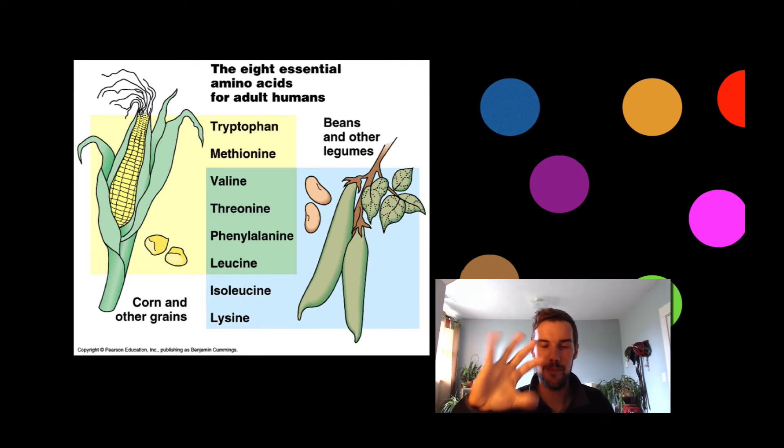We need beans and other legumes and we also need corn and other grains put together in order to have a complete balanced diet of all 20 essential amino acids.